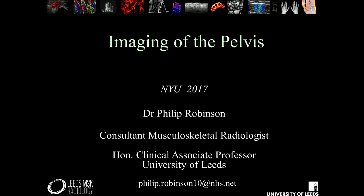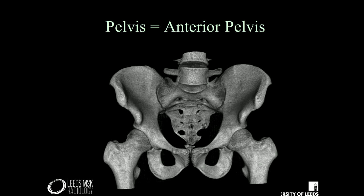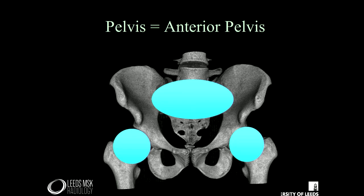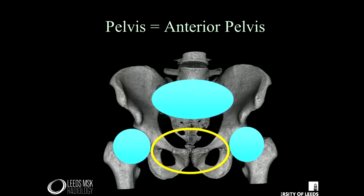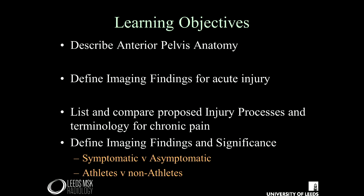I'm going to talk about imaging of the pelvis. I'm Dr. Philip Robinson from the University of Leeds in the United Kingdom. In your other lectures in this package, there'll be a lecture specifically covering the hips and the SI joints. We're going to look particularly at the anterior pelvis — describing the anterior pelvis anatomy, imaging findings for acute injury, proposed injury processes for chronic pain, and imaging significance in chronic pain for symptomatic and asymptomatic patients and for athletes versus non-athletes.